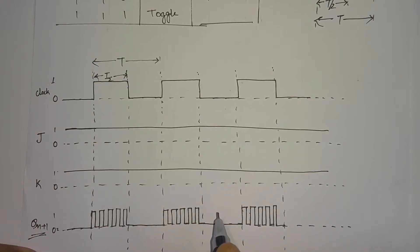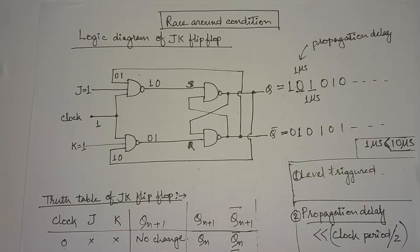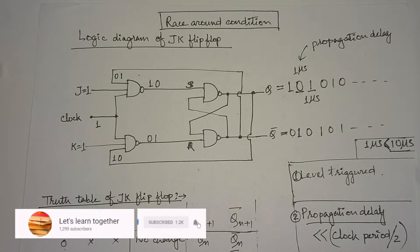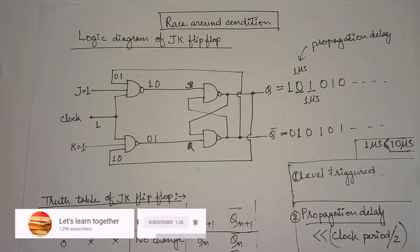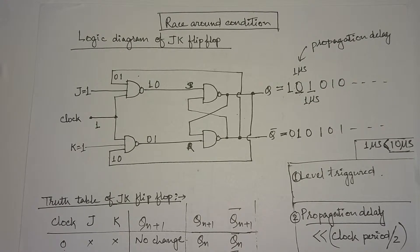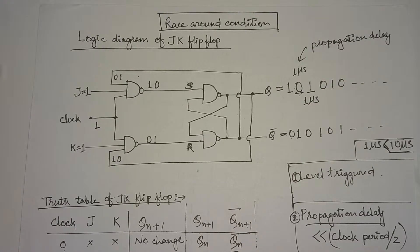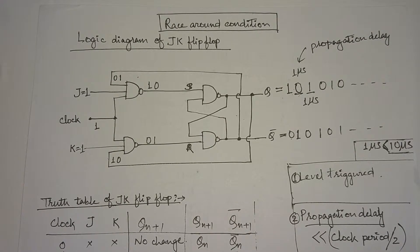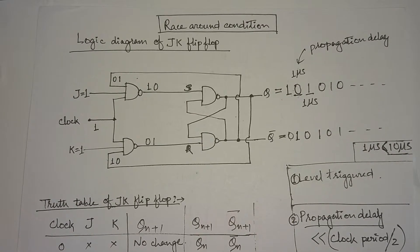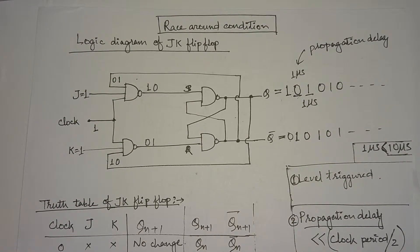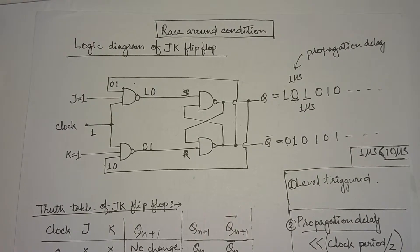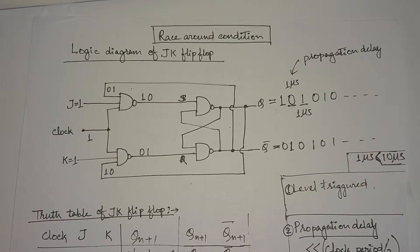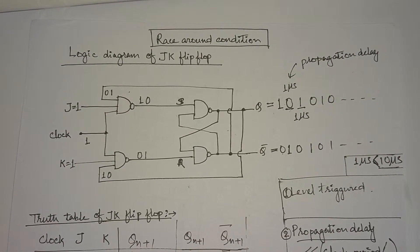This is one problem with the JK flip-flop. Whenever J and K inputs are both 1 and the propagation delay of the flip-flop is much less than the clock pulse time, the flip-flop continuously toggles the output and an unpredictable output condition arises — we cannot predict whether the output will be high or low after the clock pulse. This condition is called the race around condition.